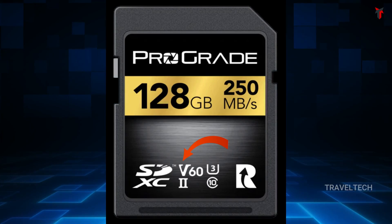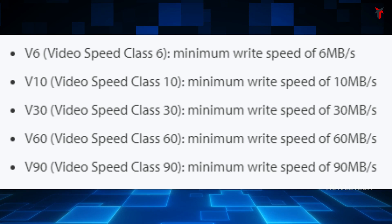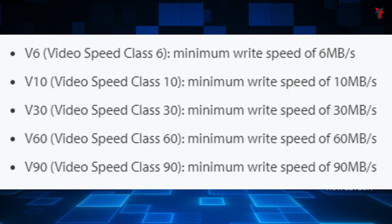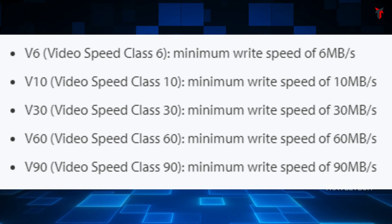The last speed class is the video speed class — the latest, created to enable higher video resolutions, multiple data streams, 360 degree videos, and VR recording. It's denoted by the letter V, with five ratings: V6, V10, V30, V60, and V90, corresponding to minimum write speeds of 6, 10, 30, 60, and 90 MB/s respectively. The video speed class can utilize both UHS I and UHS II bus interfaces, but UHS I can only support V6 to V30, while UHS II supports the full range up to V90.